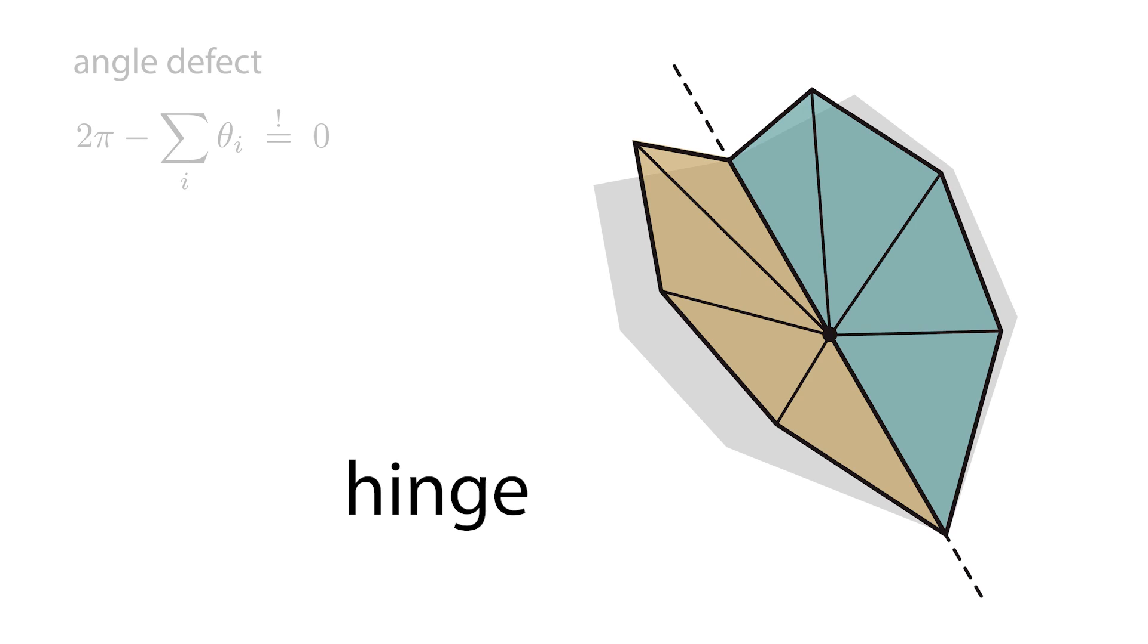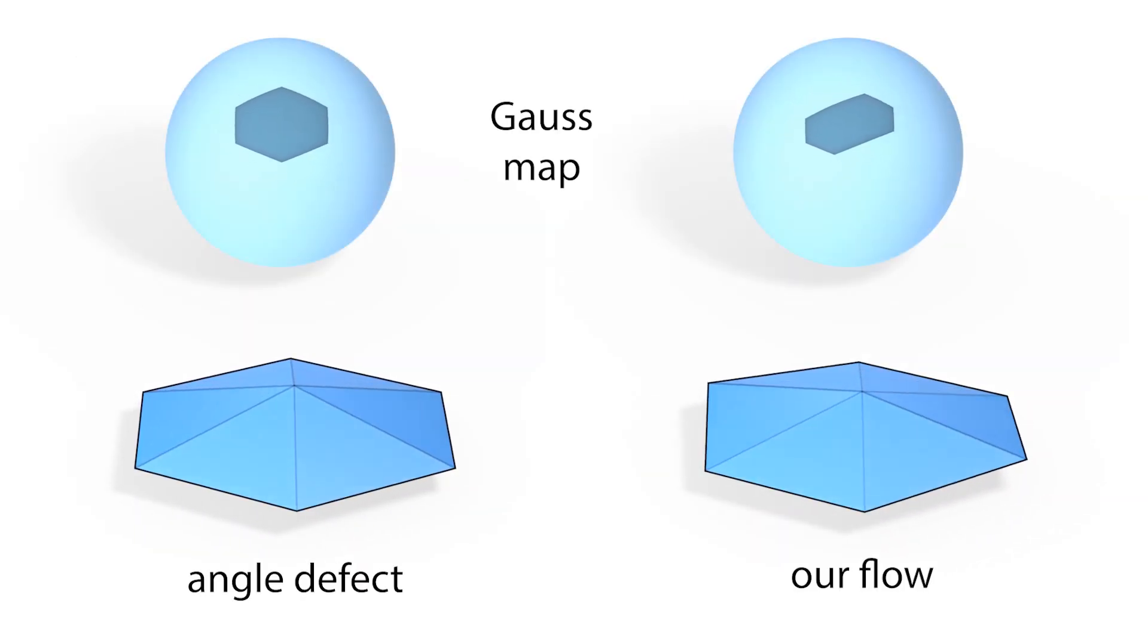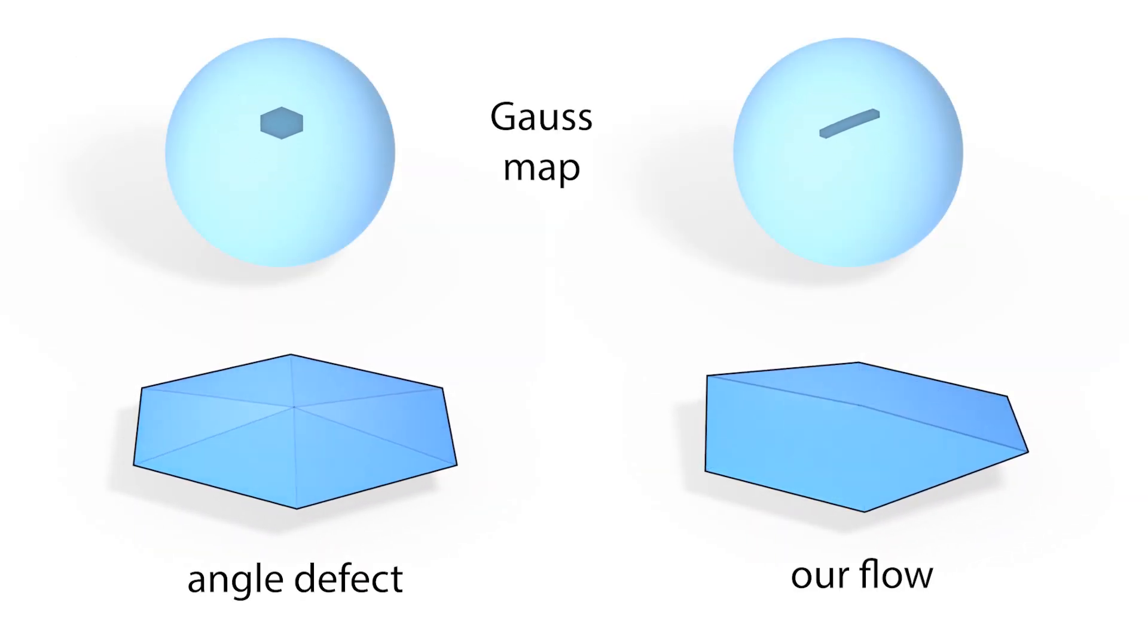This definition is used to define a developability energy which measures a surface's failure to fulfill this condition. Minimizing our energy will transform this single vertex neighborhood into a hinge. Minimizing the squared angle defect, a standard way to measure flattenability, will flatten it.